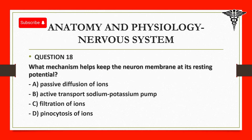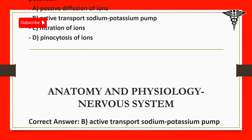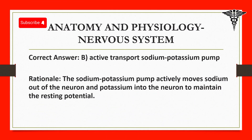Question 18: What mechanism helps keep the neuron membrane at its resting potential? A. Passive diffusion of ions. B. Active transport sodium-potassium pump. C. Filtration of ions. D. Pinocytosis of ions. Correct answer: B. Active transport sodium-potassium pump. Rationale: The sodium-potassium pump actively moves sodium out of the neuron and potassium into the neuron to maintain the resting potential.